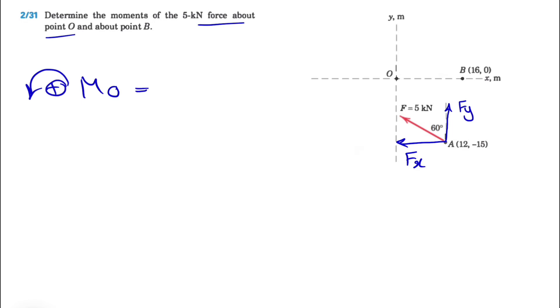Let's start with finding the moment about point O. As always, we're going to call counterclockwise positive moment. We have the moment of FX and FY, and what we need in here is the vertical distance to the line of action. So let's start with FY.